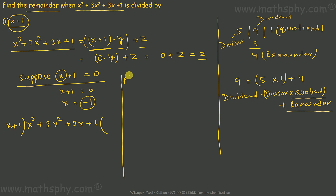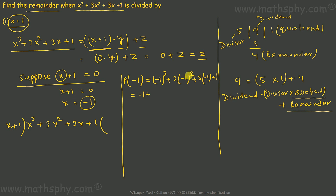Let's try that. Replace x with −1: (−1)³ + 3(−1)² + 3(−1) + 1 = −1 + 3 − 3 + 1 = 0. The remainder is 0, meaning x + 1 completely divides this polynomial, leaving no remainder.